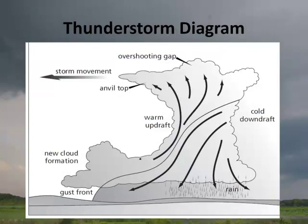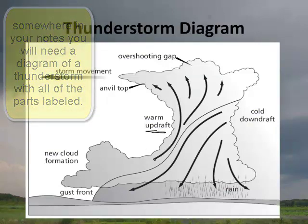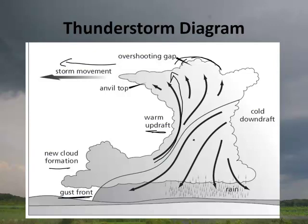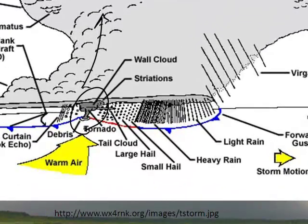Here's a diagram of a thunderstorm. It's caused by warm updrafts rising upward. As it rises, it reaches what's called the overshooting top — the part that briefly pushes past the tropopause — forming the anvil top. This particular storm is moving in one direction; we'll talk about the gust front shortly. As it rises, it eventually produces a cold downdraft, leading to rain, hail, and tornadoes.